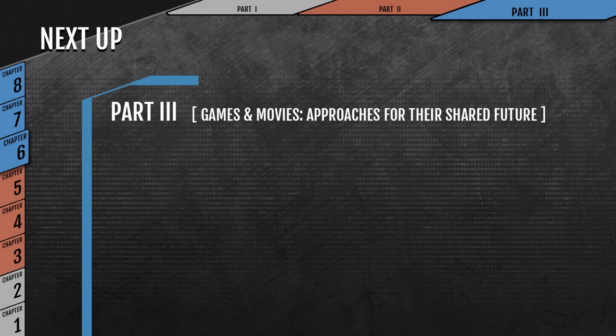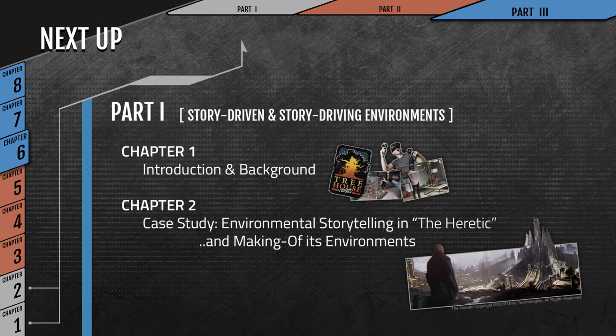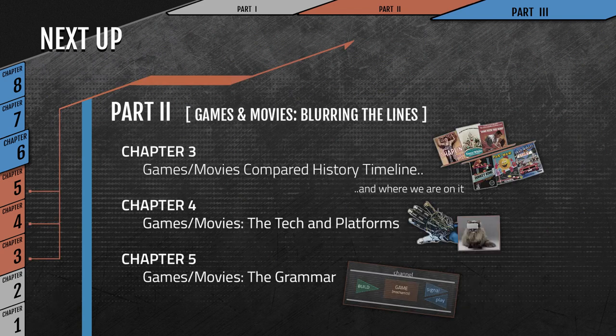Now, the last part of the talk. In this part, we will touch on the leads of a few Pandora's boxes. In the first part, we set the stage by using the Heretic short movie Unity Demo as a case study, as a movie done with game technology. In the second part, we focused on finding out in which historical moment we are in the timelines of the history of games and the history of movies. And then we developed some thoughts about first the tech, but then prominently about the grammar.